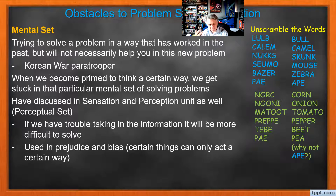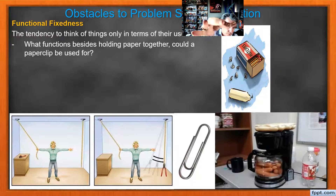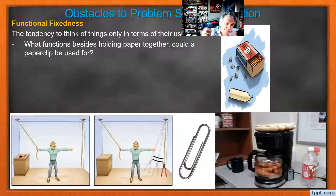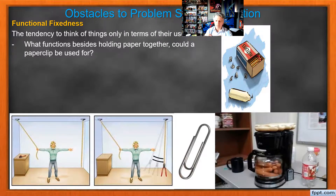Prejudice and bias lock us in. A functional fixedness example: a paperclip — what is it used for? Well, clipping paper. But could I use it for other things? Some people use it to pick a lock. You could use it to get the SIM card out of your phone, to clean up a ring, I've used one as a tie clip behind my shirt, and I've used one as a flathead screwdriver. There's a lot of things this could be used for besides holding paper. So a lot of times with functional fixedness, someone thinks 'how do I get over to this rope?' — they can't see that they could use a little wrench as a weight to swing the rope to them.